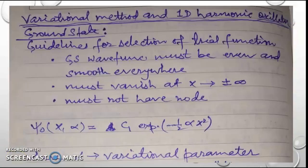Now let us apply this variational method to determine the ground state as well as the first excited state energy and wave function for the one-dimensional harmonic oscillator. We will first consider the ground state. We have to follow certain guidelines for selection of the trial function in the ground state. The ground state wave function must be even and smooth everywhere. It must vanish at x equal to plus infinity and minus infinity, and it must not have any node.